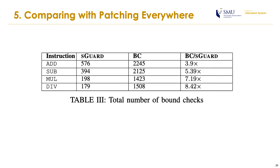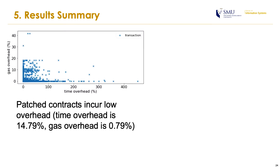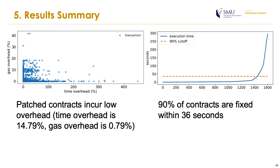Here I summarize some noticeable results from our paper. A trivial approach to fix integer overflow or underflow is to wrap every arithmetic opcode with a safe math function call — this is used as the baseline. As you can see in the table, ESGARC generates significantly fewer safe math function calls than the baseline. For example, for the ADD instruction, the baseline generates four times more safe math calls than us. Our experiment results also show that our fixing approach incurs modest overhead: an additional 15% of time and 0.8% of gas. And 90% of fixed smart contracts are fixed within 36 seconds.